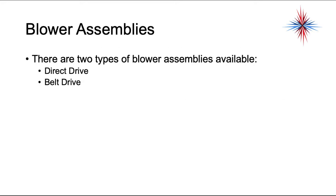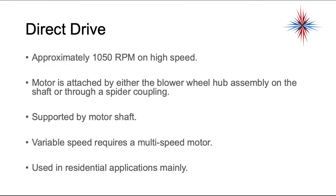There are two types of blower assemblies available: direct drive and belt drive. The direct drive has approximately 1050 RPM on high speed. The motor is attached by either the blower wheel hub assembly on the shaft or through a spider coupling. The motor is actually supported by the motor shaft and the blower wheel. The variable speed requires a multi-speed motor and it's used in residential and light commercial applications.